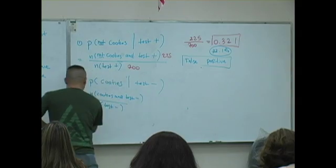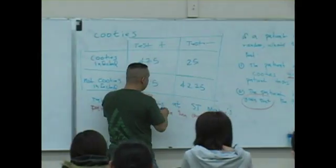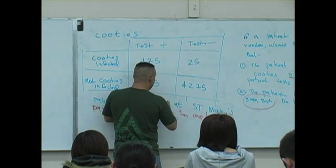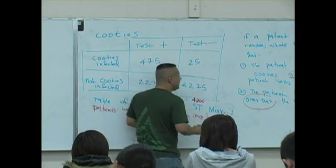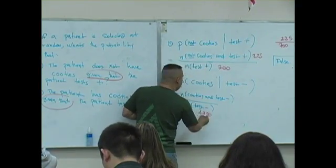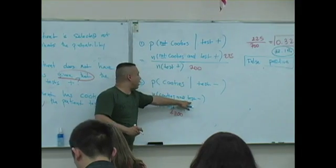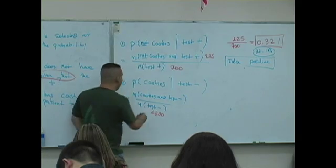So tell me, how many people tested negative here? How many? 4,300? 4,300 people tested negative. Okay. Of the 4,300 people, how many also, or how many of those 4,300 had cooties? How many? 25.